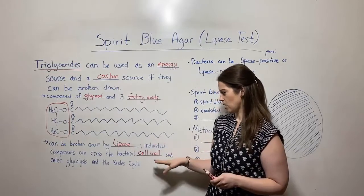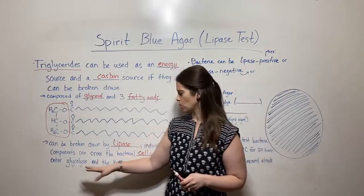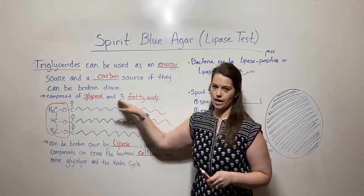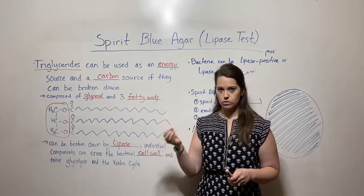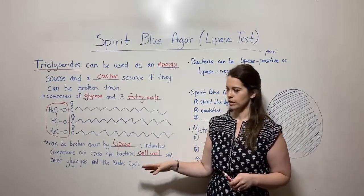Once they cross the cell wall, they can be used. They can enter glycolysis or enter the Krebs cycle, depending on which one we're talking about. They can then be used to extract energy as an energy source in the process of aerobic respiration.